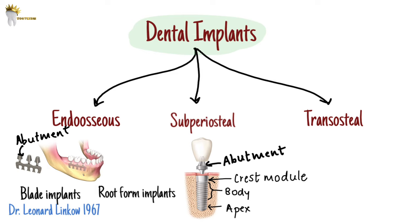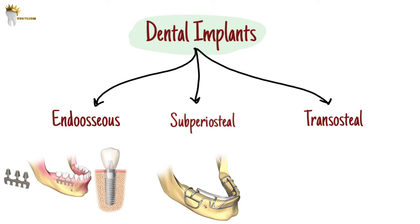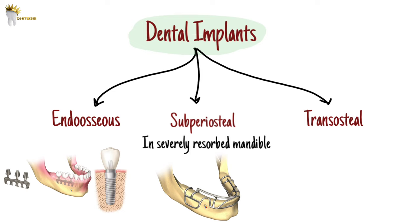Subperiosteal implants are the implants that are placed under the periosteum and fixed over the jaw bones. These are used when we can't use endosseous implants — for example, in a severely resorbed mandible where the mandibular canal is close to the crest of the ridge. The first subperiosteal implant was placed in 1949 by Dr. Gustav Dahl.